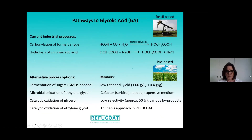Glycolic acid is already an industrial product to some minor extent, currently prepared by carbonylation of formaldehyde, but a major part by hydrolysis of chloroacetic acid. The feedstocks used in these industrial processes are fossil-based, so we searched for a bio-based alternative, and there are several.